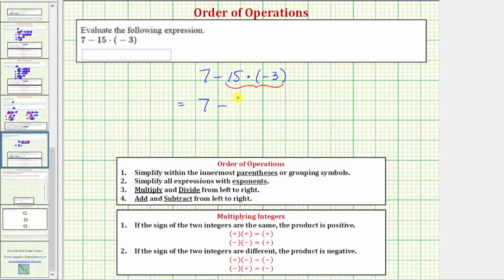So the expression simplifies to 7 minus negative 45, and then subtracting a negative is the same as adding a positive. So 7 minus negative 45 equals 7 plus 45, and 7 plus 45 is equal to 52. So the given expression has a value of 52, or we can say the expression simplifies to 52.